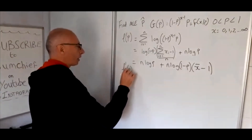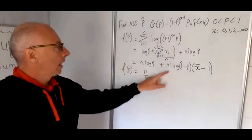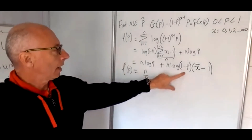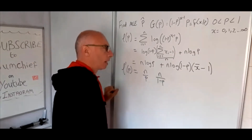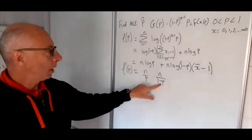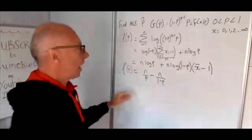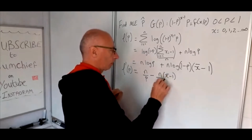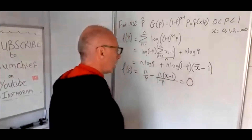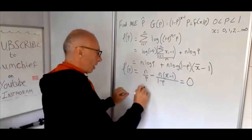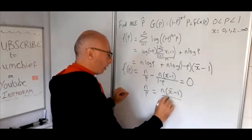Now we take the derivative with respect to P. The term n log P becomes n over P. For the term n times x̄ minus 1 times log of 1 minus P, by the chain rule the derivative of log of 1 minus P is negative 1 over 1 minus P, so we get minus n times x̄ minus 1 over 1 minus P.